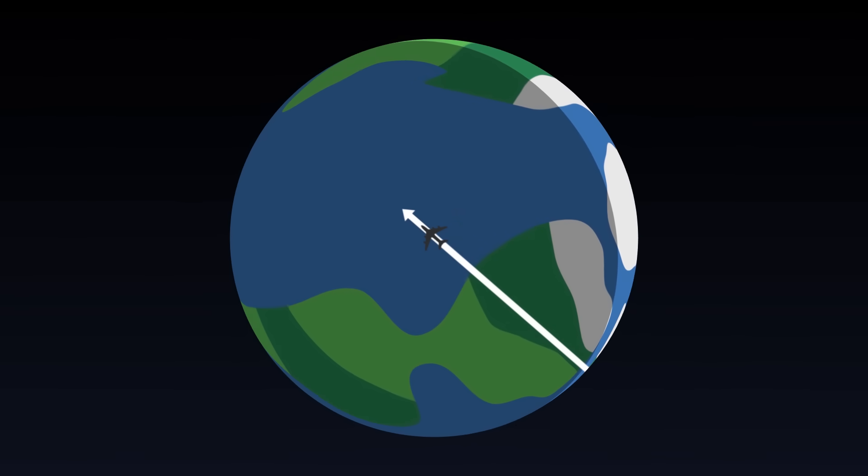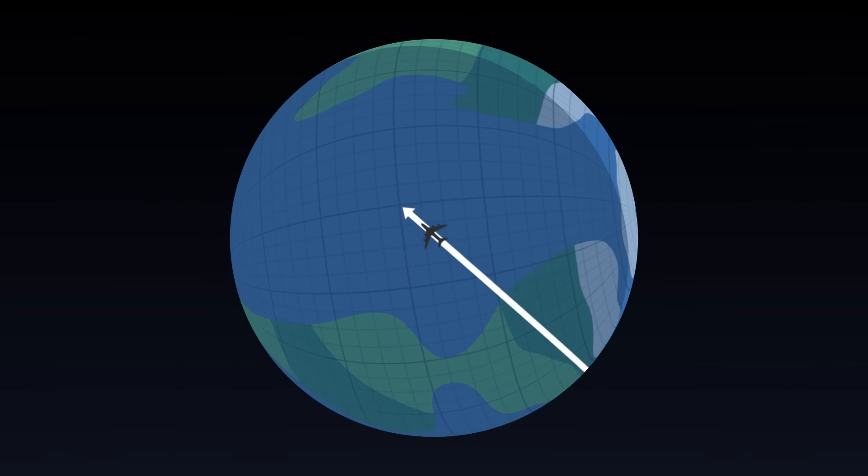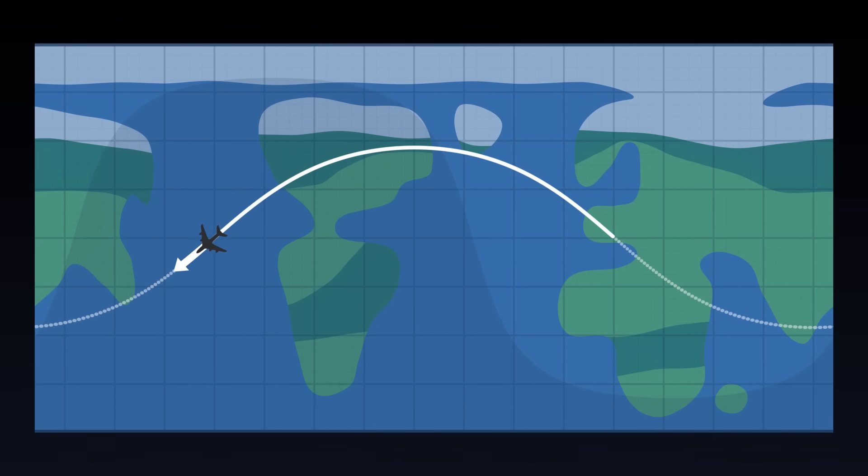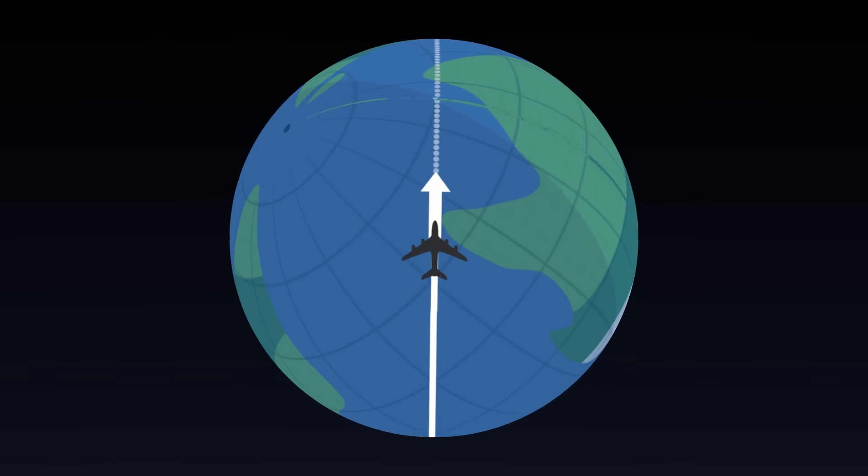But when we plot the coordinates, the trajectory seems curved. The airplane seems to change orientation along the grid. In reality, its trajectory is perfectly straight.